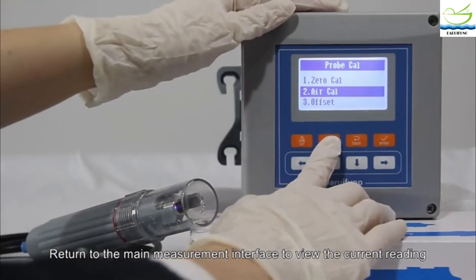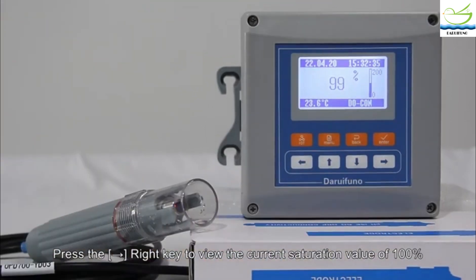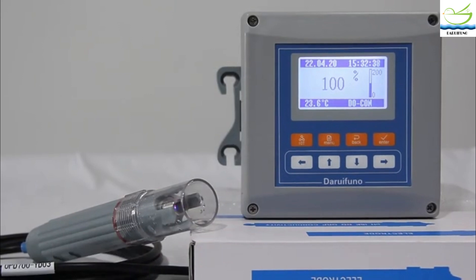Return to the main measurement interface to view the current reading. Press the right key to view the current saturation value of 100%. Now the air calibration is finished.